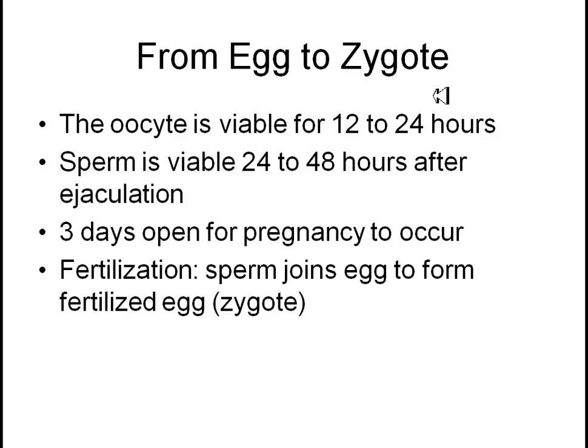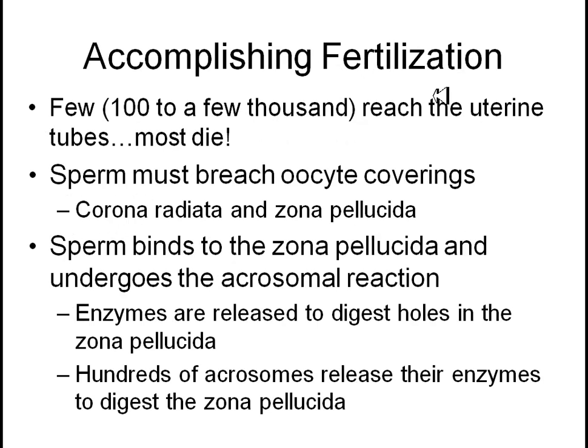Fertilization is the term given to when the sperm actually joins with the egg. To accomplish this is a heck of a feat. The vast majority of sperm are going to die — the vaginal tract is slightly acidic and can kill off many, and many just do not make it through the opening of the cervix. Once inside the uterus, there's a choice of going up the right or left fallopian tube, and there's only going to be an egg in one side. So only a few hundred, maybe a few thousand, actually make it.